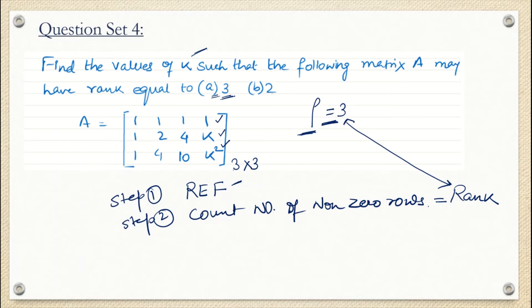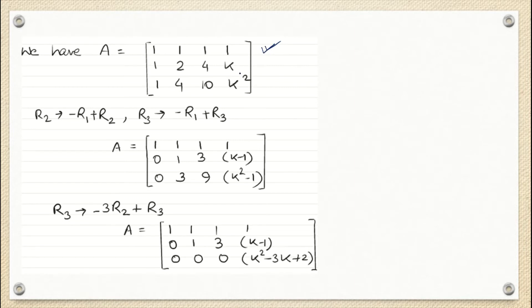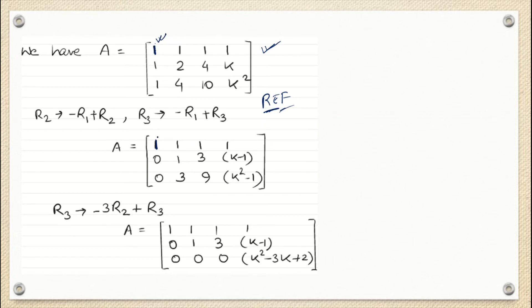Step number 1: I am going to find the row echelon form of the matrix using only elementary row operations. We will not perform elementary column operations to convert the matrix into echelon form. To convert the matrix into row echelon form, my first focus is the very first element of the very first row, which should be 1 — and here it is 1, so that's fine. This 1 is called the leading 1, and all elements of the matrix below the leading 1 should be 0.